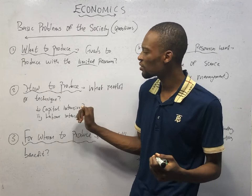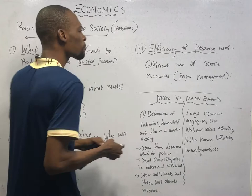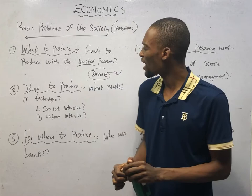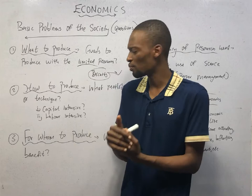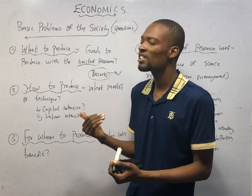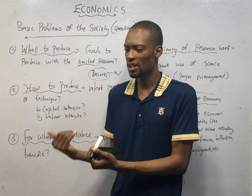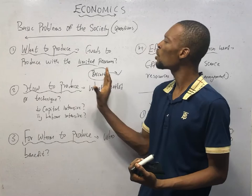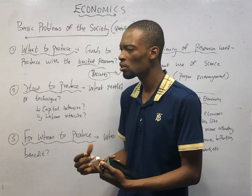Now that you know what to produce — for example, biscuits — the next question is how to produce them. How to produce speaks of the technique to use in production: you need to choose between capital-intensive or labor-intensive methods. Capital-intensive means using more machines than humans; labor-intensive means using more human effort than machines. Depending on what you are producing, you choose the appropriate method.